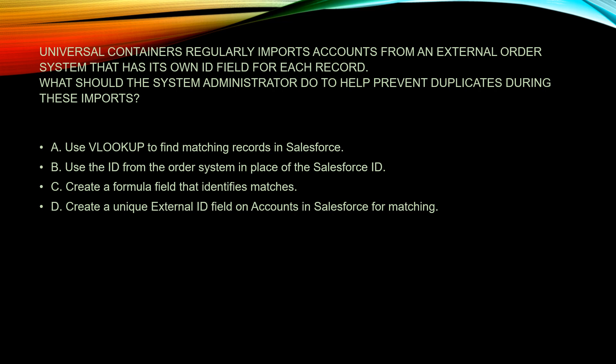Question ten: Universal Containers regularly imports accounts from an external order system that has its own ID field for each record. What should the system admin do to help prevent duplicates during these imports? A: Use a VLOOKUP to find matching records in Salesforce. B: Use the ID from the order system in place of the Salesforce ID. C: Create a formula field that identifies matches. D: Create unique external ID fields on the accounts in Salesforce for matching.